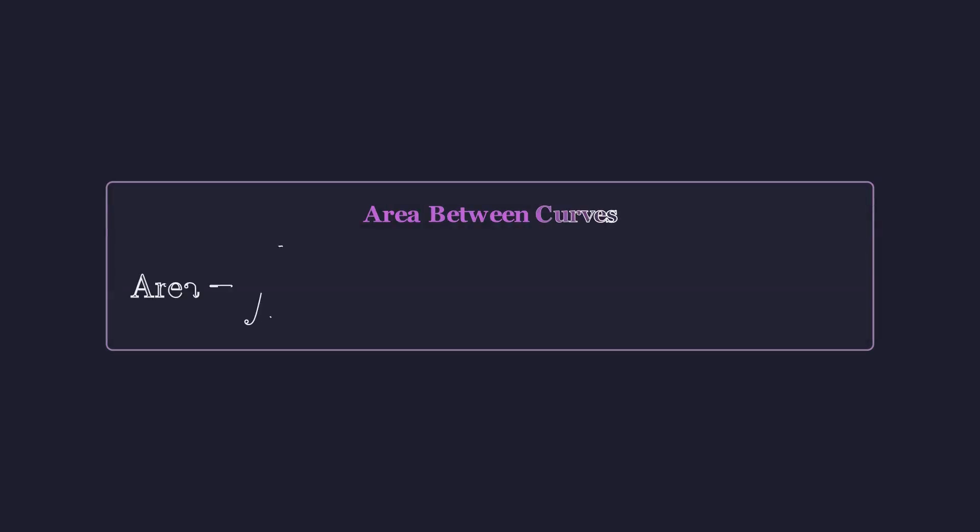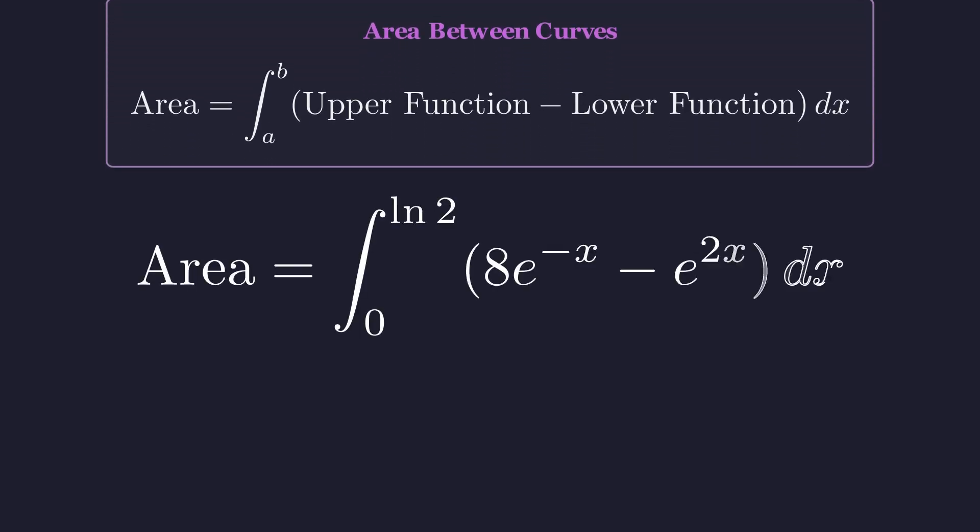Alright, now that we know the boundary, let's compute the area. The key idea for finding area between curves is to integrate the difference between the upper and lower functions over the interval. In our case, we integrate from 0 to the natural log of 2, taking the upper function minus the lower function.